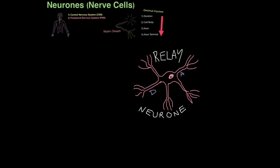Next up are the relay neurons. Relay neurons litter the central nervous system — they're everywhere. They transmit electrical impulses from one part of the central nervous system to another part of the central nervous system. They have a slightly different shape, but the same sort of structures: dendron to cell body to axon to axon terminal. You'll see they have multiple dendrons and multiple axons.